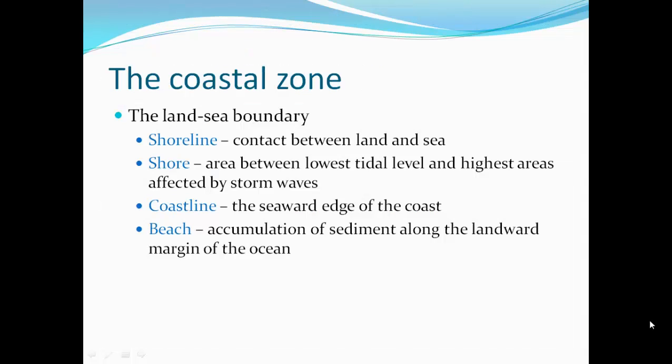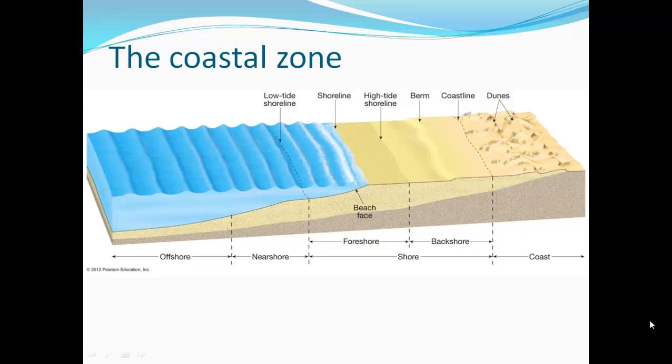The coastal zone is the land-sea boundary. The shoreline is the contact between land and sea. The shore is the area between the lowest tidal level and the highest areas affected by storm waves. The coastline is the seaward edge of the coast. The beach is the accumulation of sediment along the landward margin of the ocean.